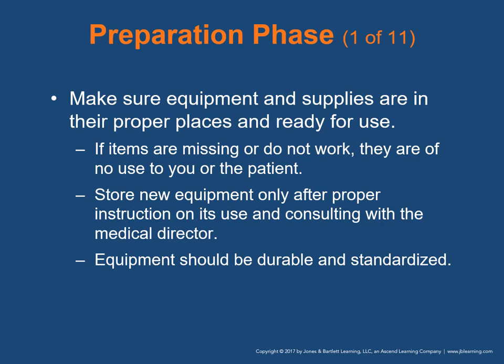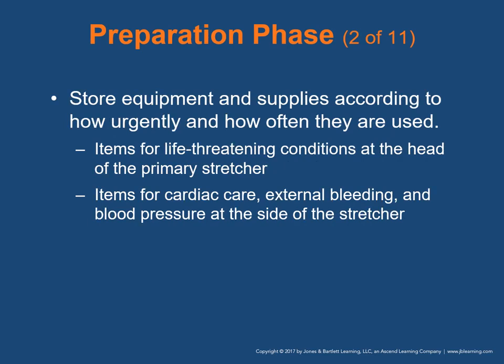In the preparation phase, make sure that equipment and supplies are in their proper places and ready for use. Items that are missing or do not work are of no use to you or the patient. New equipment should be placed on an ambulance only after proper instruction on its use and consulting with the medical director. Equipment and supplies should be durable and standardized. Store equipment according to how urgently and how often they are used. Place items needed for life-threatening conditions within easy reach at the head of the primary stretcher, and cardiac care and blood pressure monitoring items at the side of the stretcher.